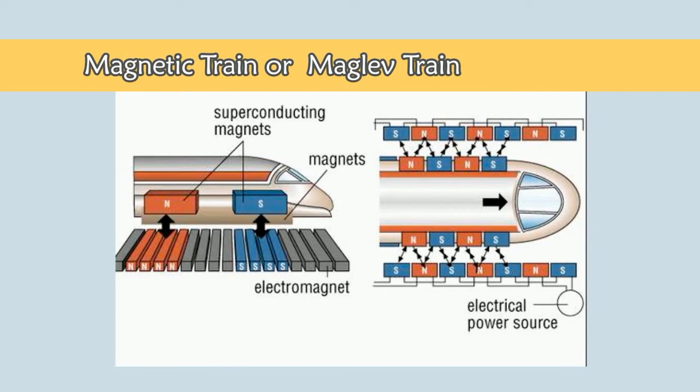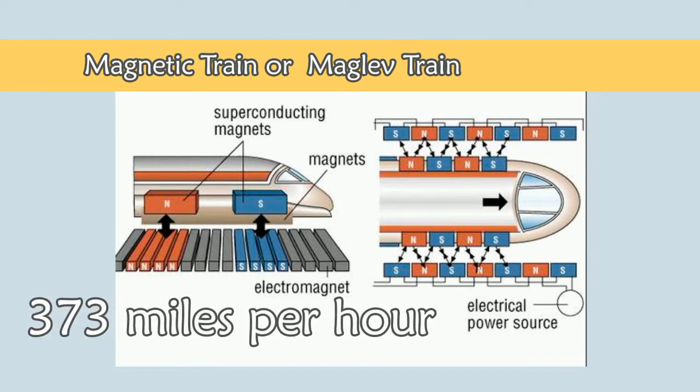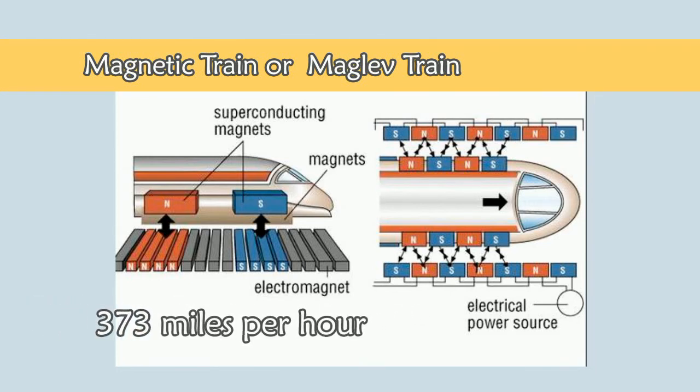These trains float over guideways using the basic principles of magnets to replace the old steel wheel and track trains. There is no rail friction to speak of, meaning these trains can hit speeds of hundreds of miles per hour.